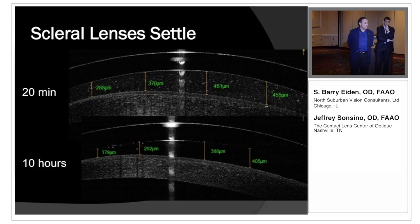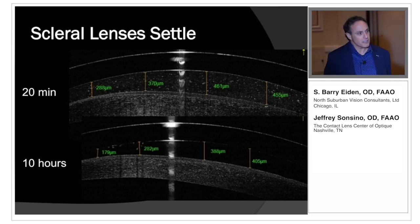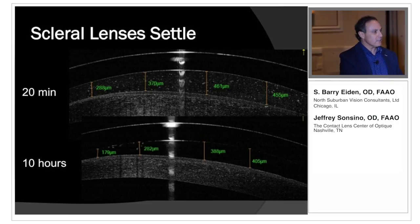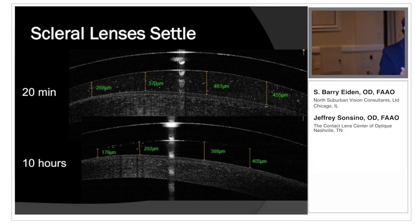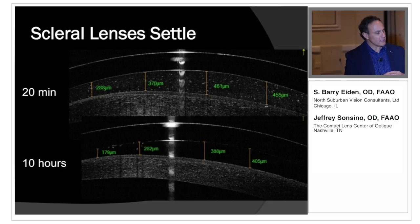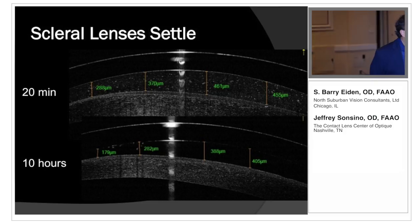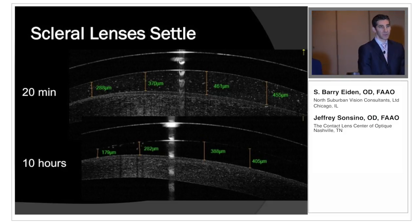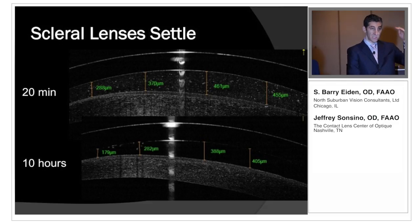Lens settling is something we all have heard about and must consider. You may take your measurements and the lens looks exactly the way you want, but you have to realize these lenses settle down 80–100 microns after a given number of hours of wear. Predict that when first dispensing, and always keep in mind how many hours the lenses have been on when taking measurements. We're going to present at BCLA this year results of a clinical study on how much settling actually occurs with vaulting hybrid lenses.